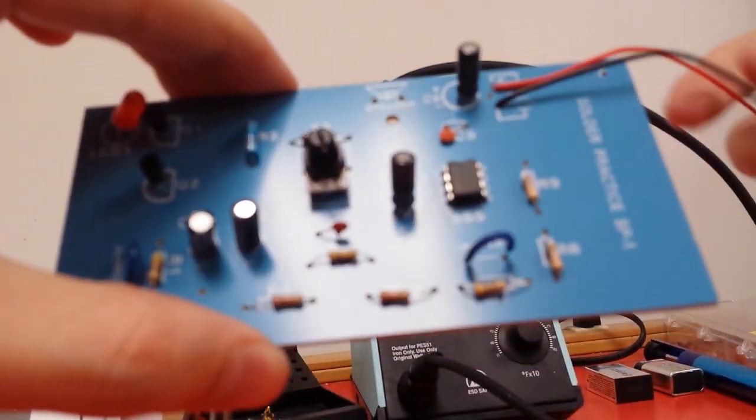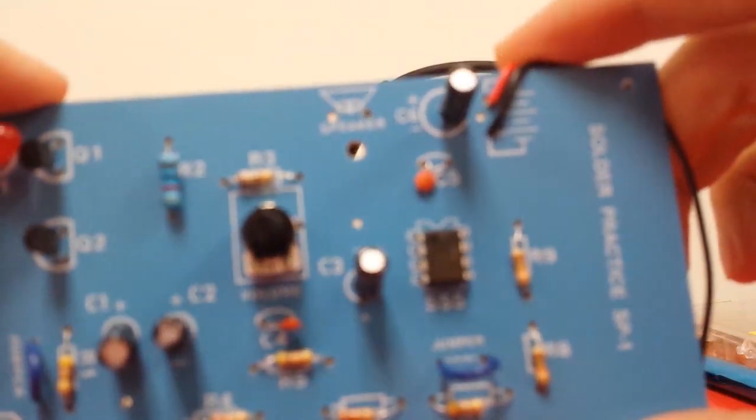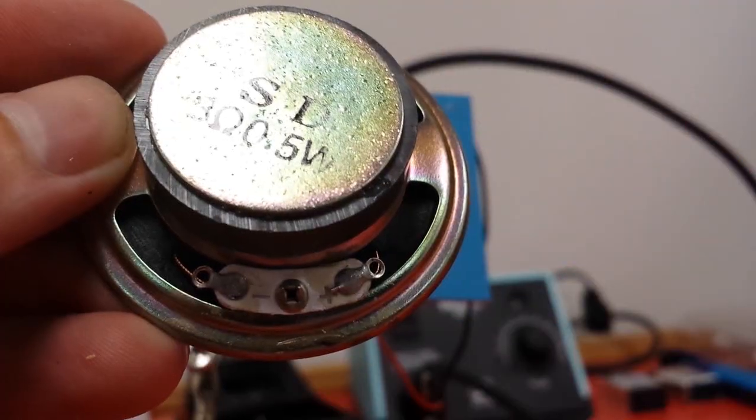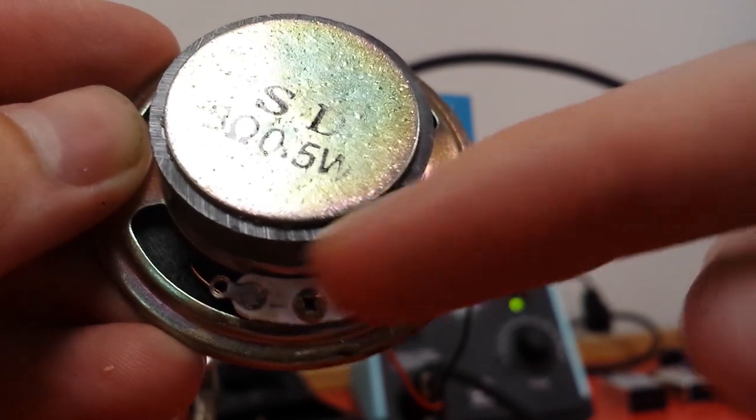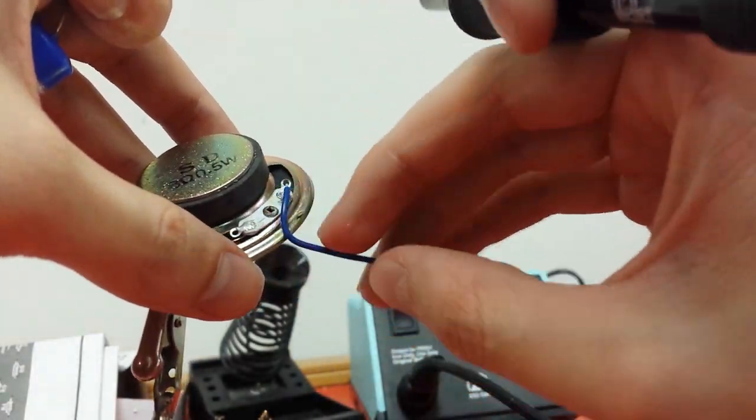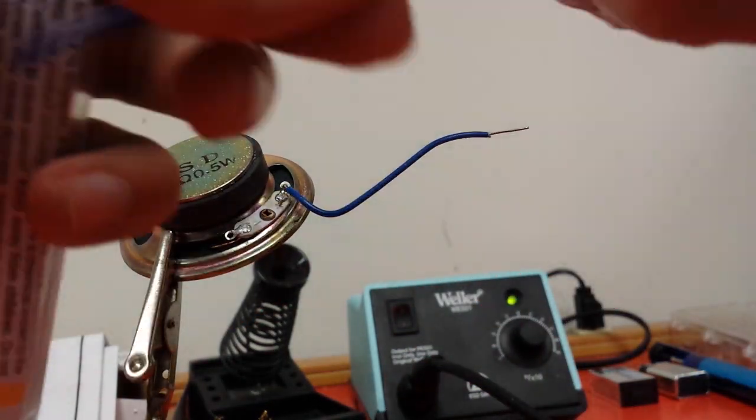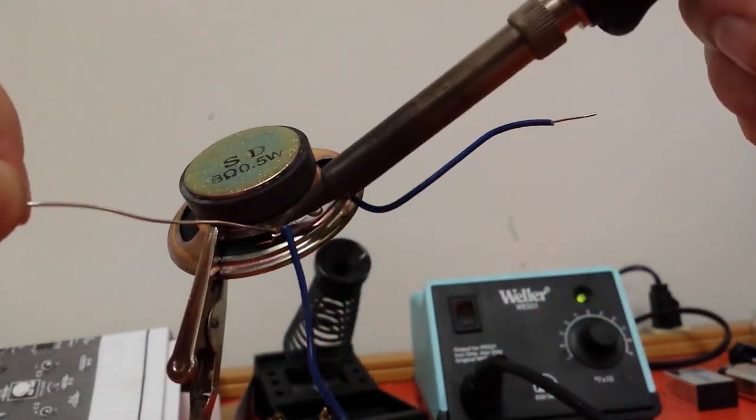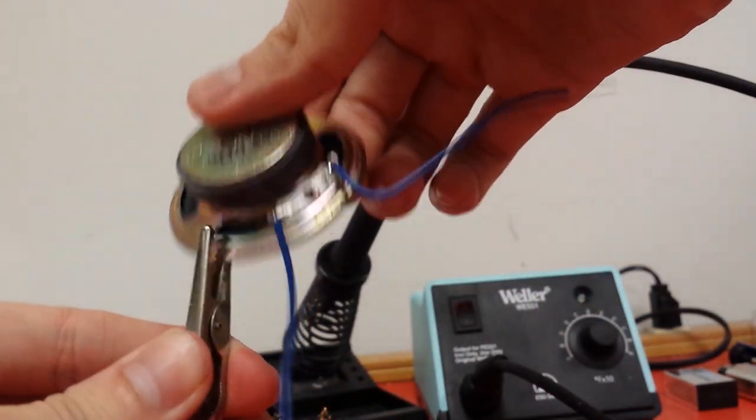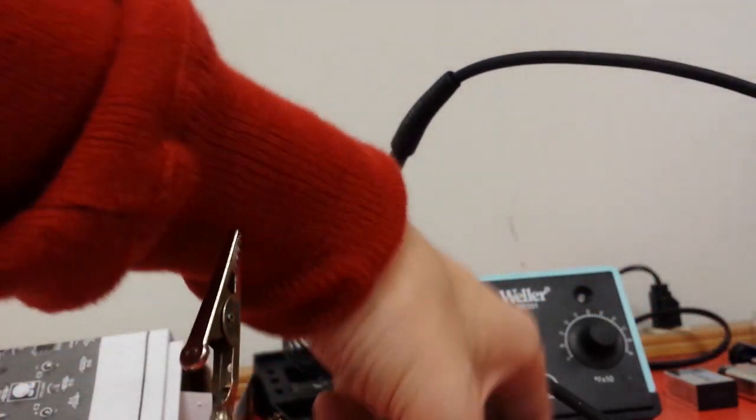And the speaker. Alright, so the speaker is going to require you to cut some more wire. Alright, you got a positive right here and a negative right next to it. Solid connections to the speaker. We're going to drop this off. Now we got it connected to the board.